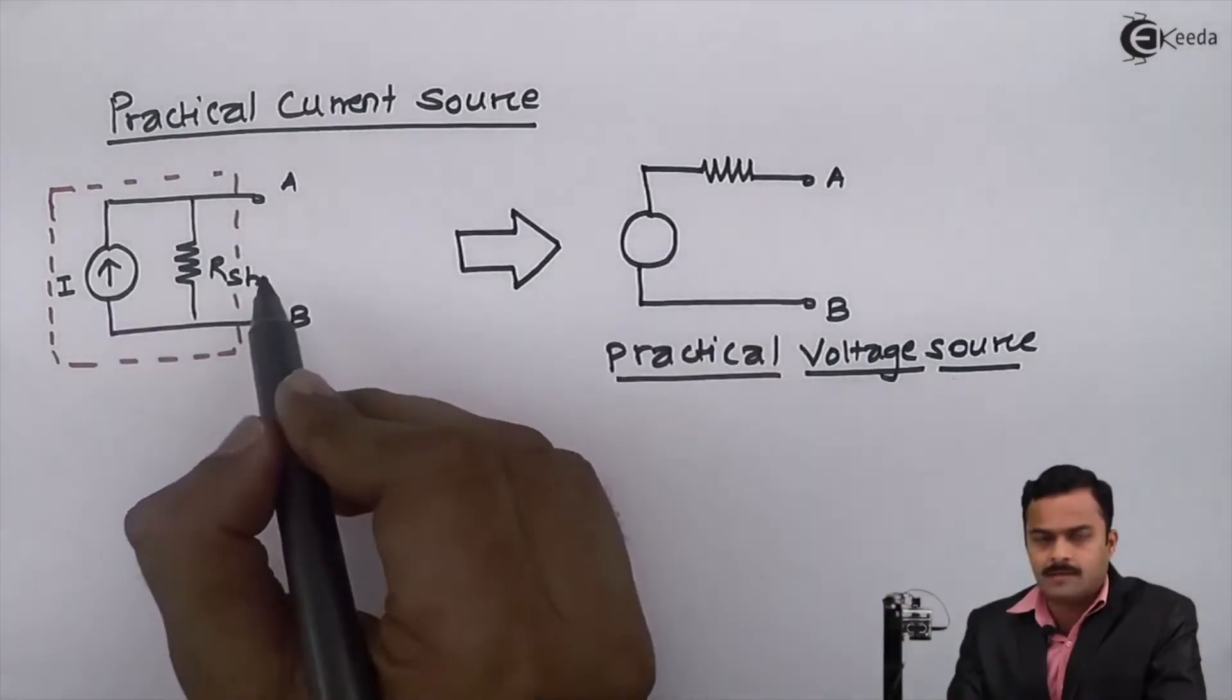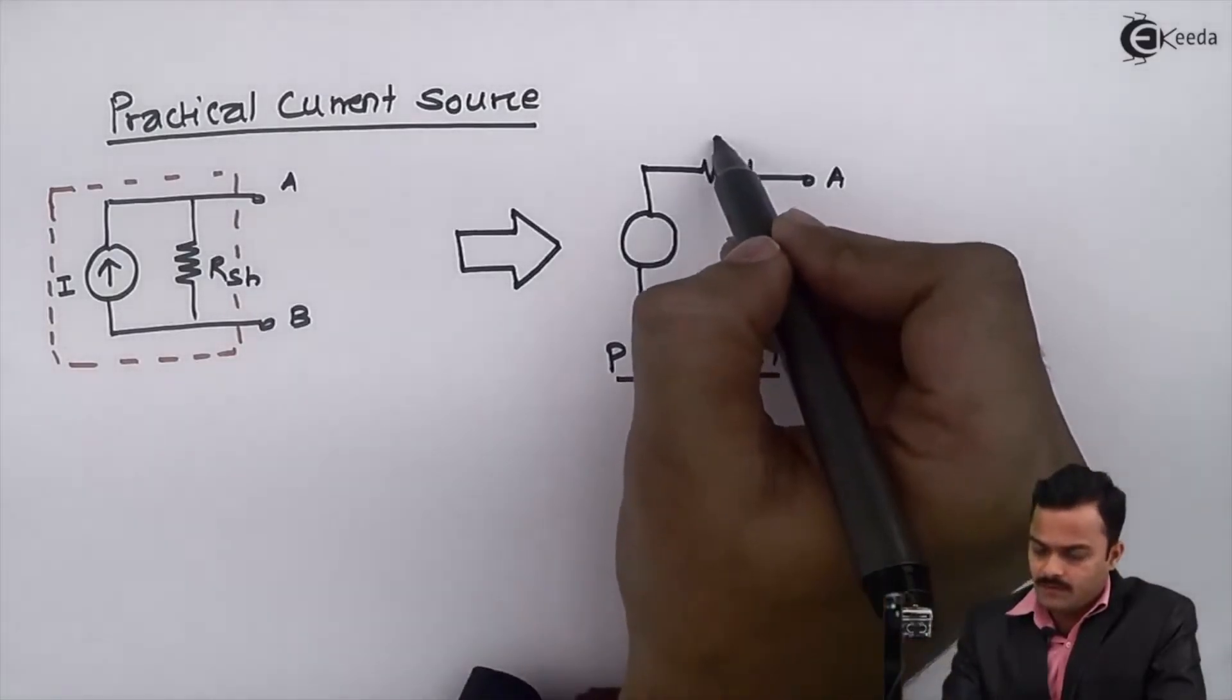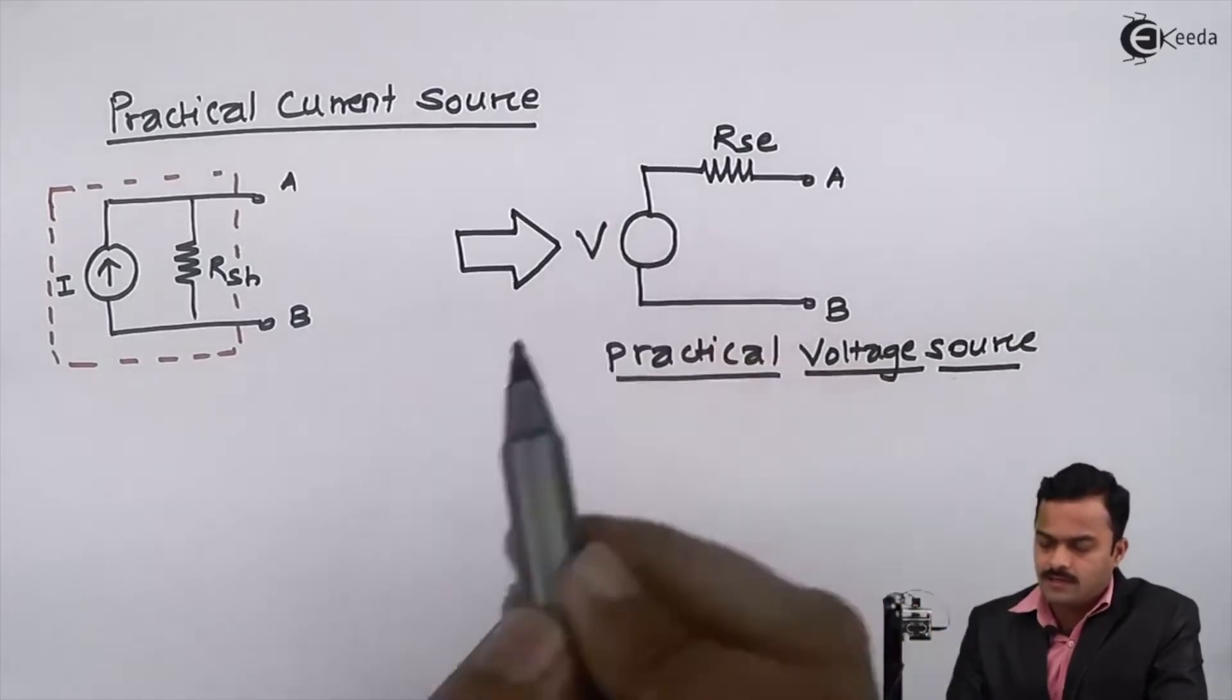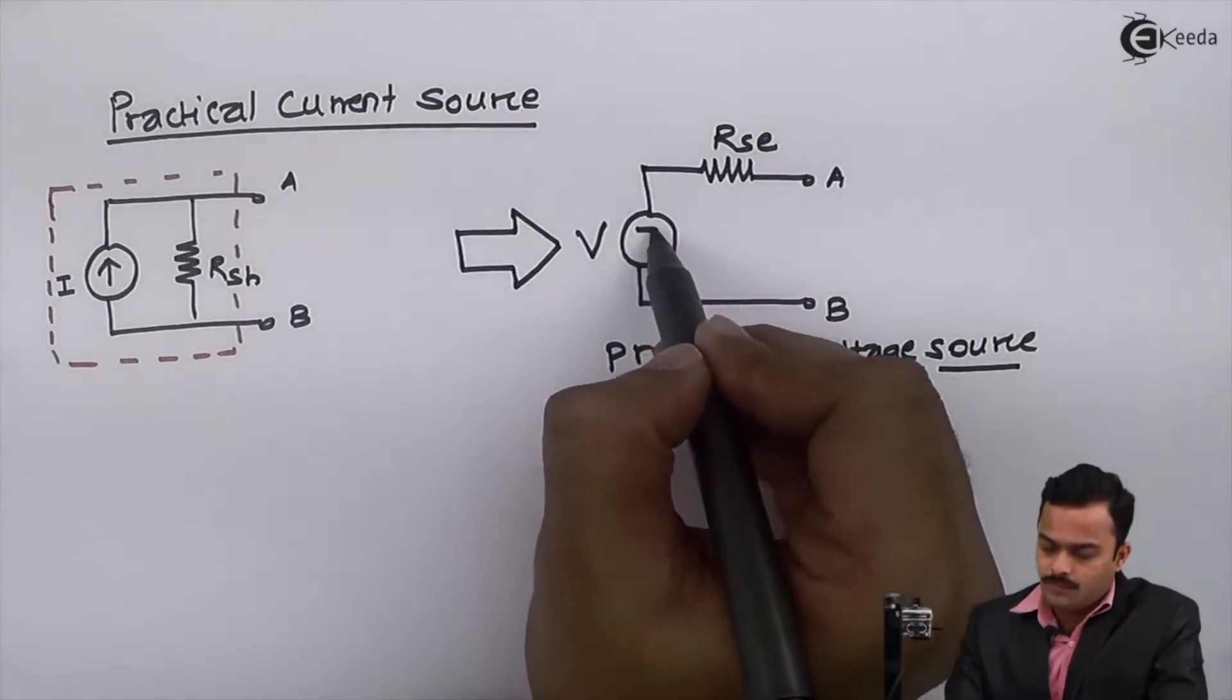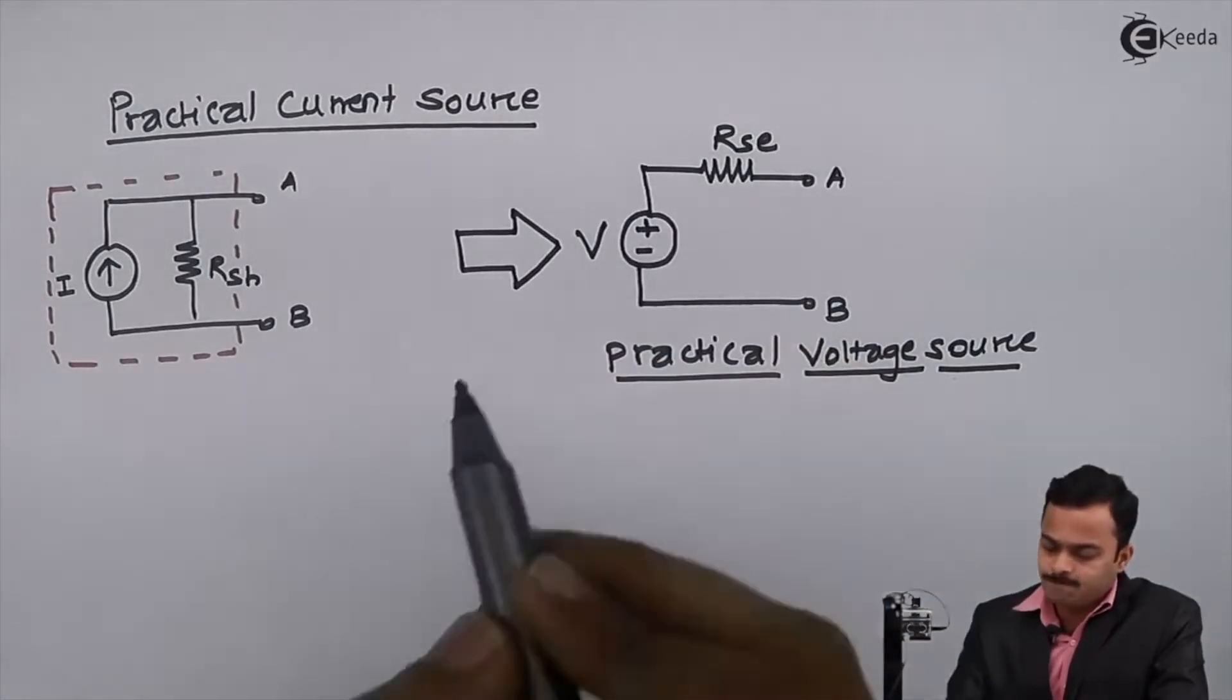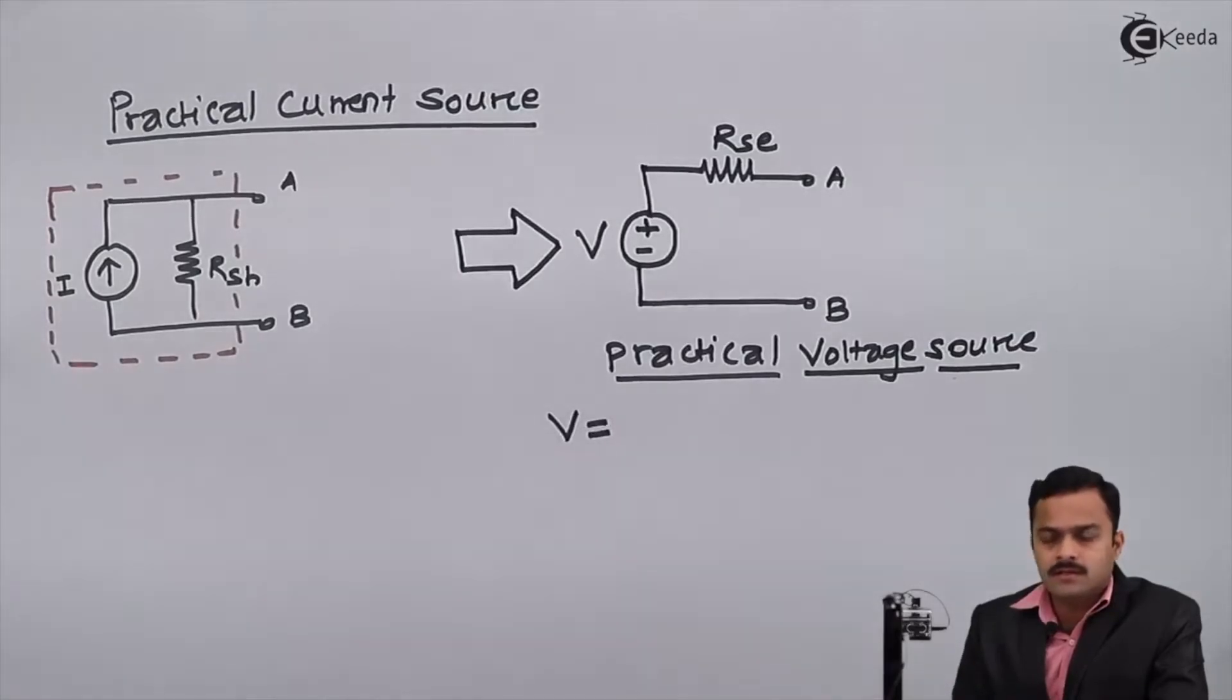So what I want here now: two elements will be here, one is this series resistor and this voltage V. So the polarity will be like this. I'll discuss how to determine the polarity. So voltage V is nothing but...